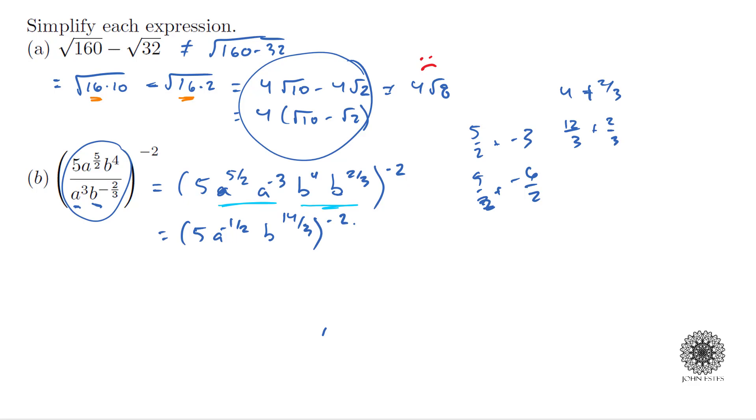Okay, so now I'm going to apply the negative 2. I'm going to square everything and take the reciprocal of that. So I'm going to have 1 over all this stuff squared. That's going to be 1 over 5 squared, which is 25, a to the negative 1 half squared. So anytime you raise it to a power, you have to multiply. So I have a to the negative 2 halves, and then b to the 28 thirds. Okay, and I just multiplied my exponents by 2 here.